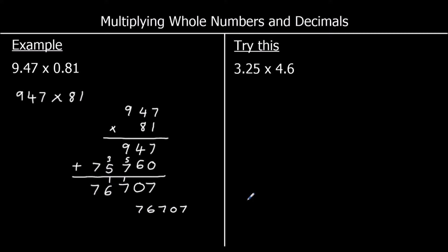But remember, I need to put my decimal places back in. I multiplied by 10 a total of 4 times, so I need to divide by 10 four times. There are 4 numbers after the decimal point in the question, so there will be 4 numbers after the decimal point in the answer.